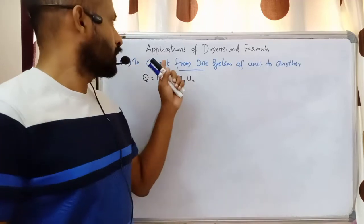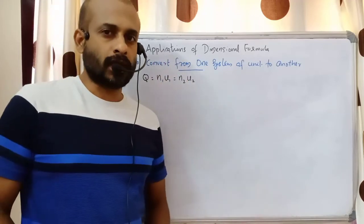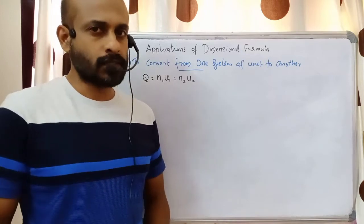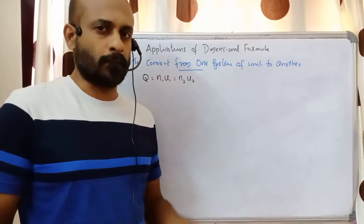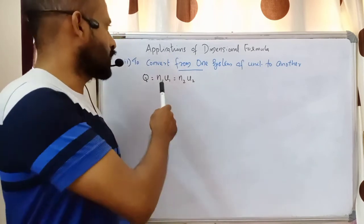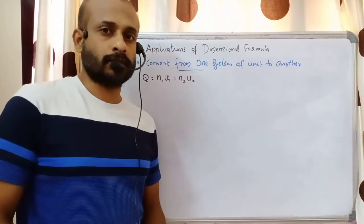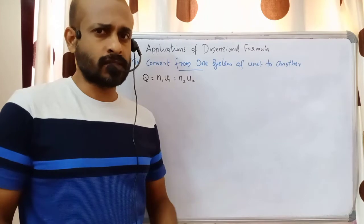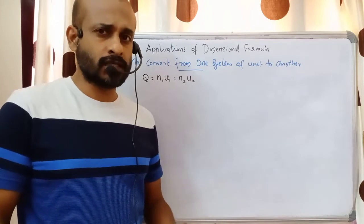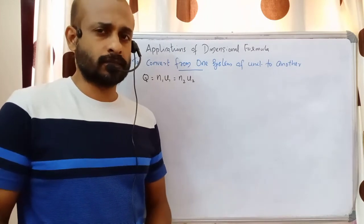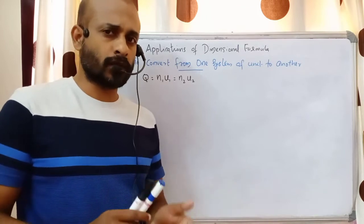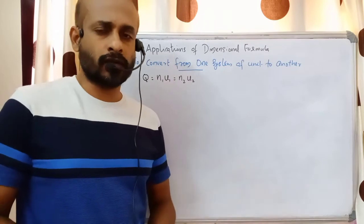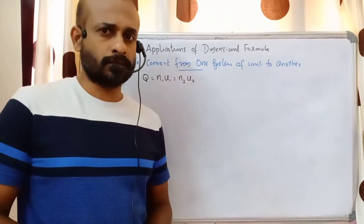Today we are going to see the third application of the dimensional formula. In the last classes we have seen two applications; now this is our third application, that is to convert from one system of unit to another. We are familiar with different systems of units like SI system, CGS, MKS, and so on. Some physical quantities we may have to convert from one system to another.